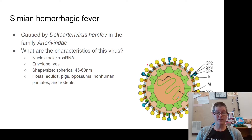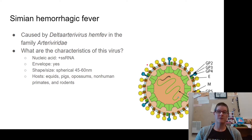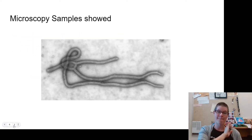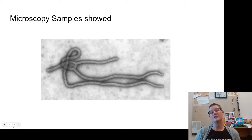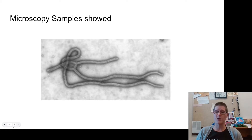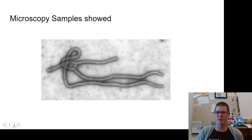The scientists at Reston did want to confirm the virus, so they took samples and put them under a microscope. Instead of finding a spherical virus, they found something quite different. Now they had to go on a hunt to figure out what kind of virus this might be. It has a very familiar shape, but we're going to use this as an excuse to learn more about viruses.